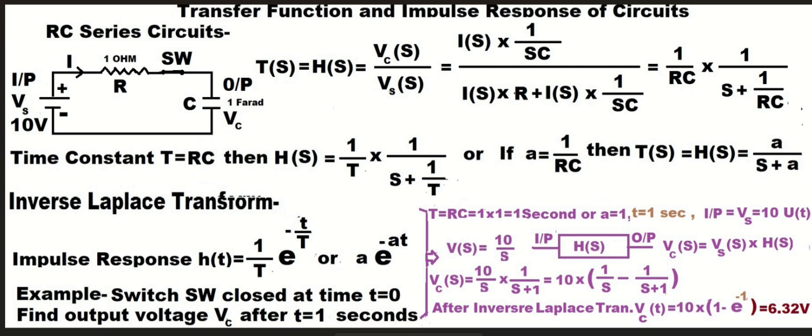This equals 1 upon RC multiplied by 1 upon S plus 1 upon RC. After putting RC equal to T, the time constant...